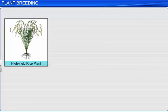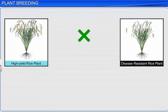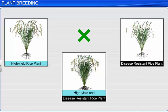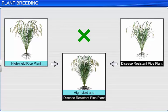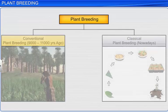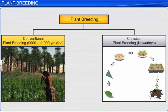Plant breeding involves crossing between plants with desired characters to produce offspring that possess the superior characters of both their parents. It dates back 9,000 to 11,000 years ago, when conventional plant breeding was practiced.